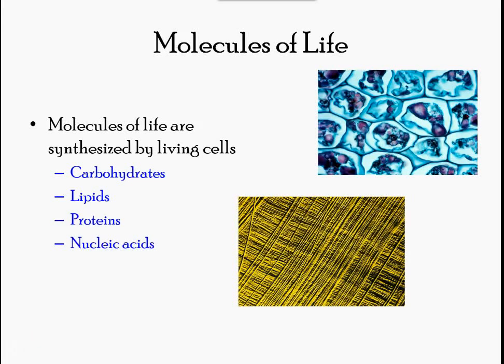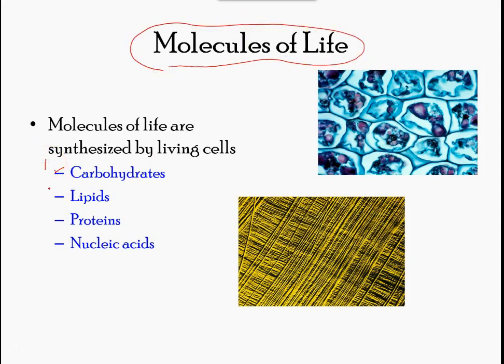The larger molecules necessary for life that are built from smaller organic molecules are called biological macromolecules. There are four major classes of biological macromolecules: carbohydrates, lipids, proteins, and nucleic acids. Each is an important component of the cell and performs a wide array of functions. Combined, these molecules make up the majority of the cell's mass.